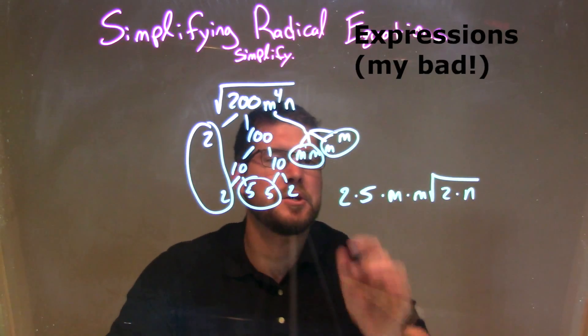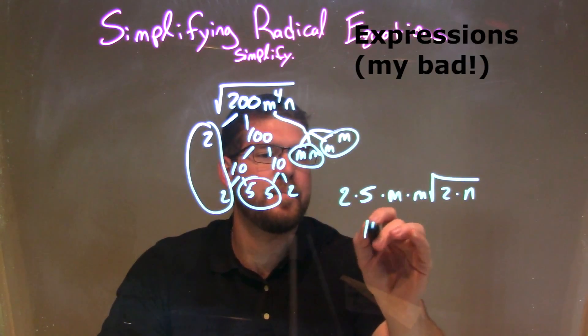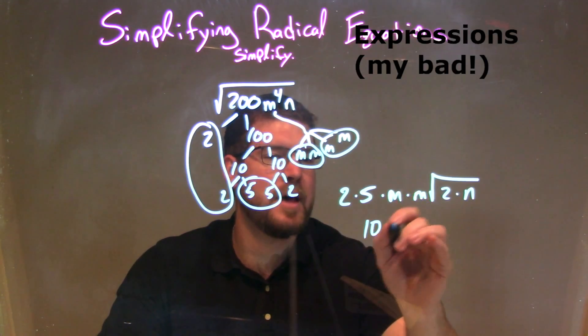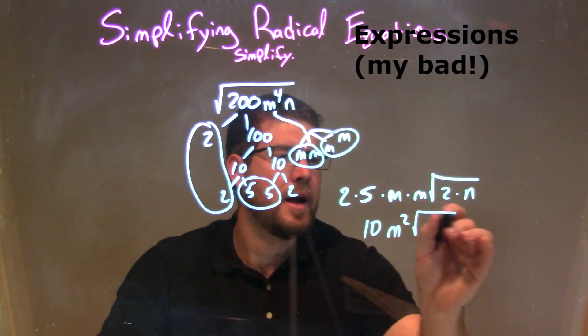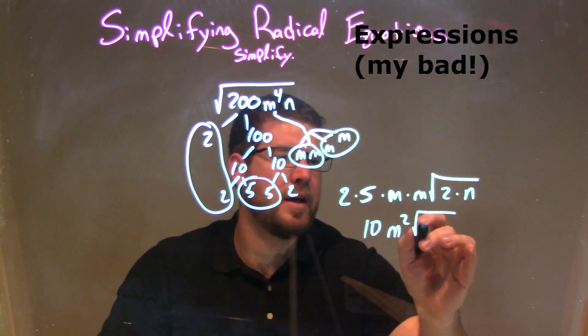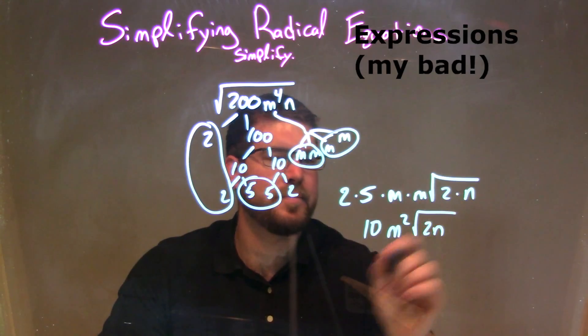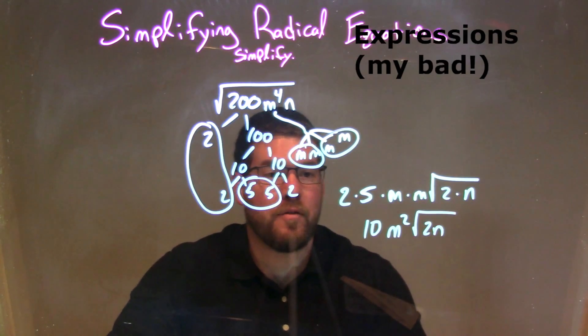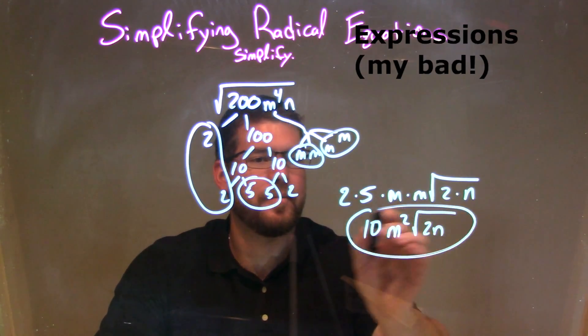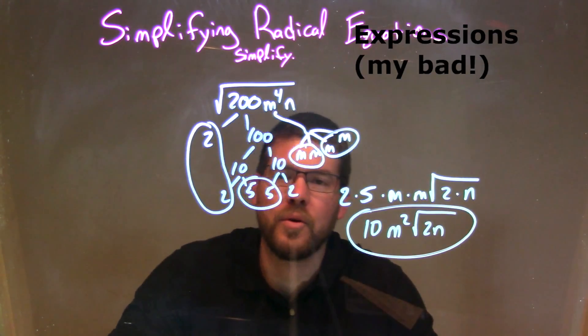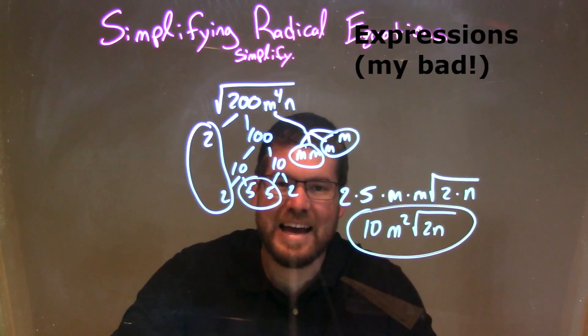So now let's simplify: 2 times 5 is 10, m times m is m squared, and then 2 times n is just 2n. So now we have a final answer of 10m squared times the square root of 2n.